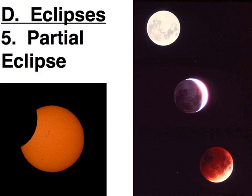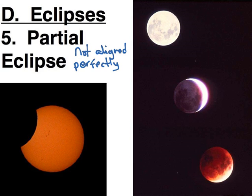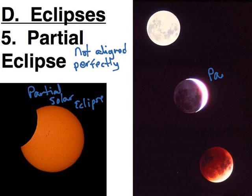The other type is called a partial eclipse — things are not aligned perfectly, so they are only partially covered. Here we have a partial solar eclipse, and here we see a partial lunar eclipse. Lunar eclipses are more common to see because, as long as you are on the right side of the earth, you can see it.